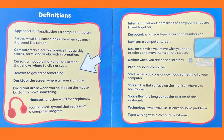Definitions. App: Short for application, a computer program. Arrow: What the cursor looks like when you move it around the screen. Computer: An electronic device that quickly stores, sorts, and works with information. Cursor: A movable marker on the screen that shows where to click or type. Delete: To get rid of something.